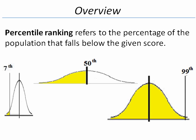Percentile ranking refers to the percentage of the population that falls below the given score. There are three examples of percentile ranking. On the left, we see someone whose percentile ranking is the 7th percentile. This person did better than 7% of the population.